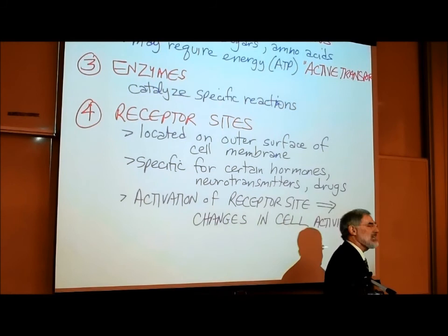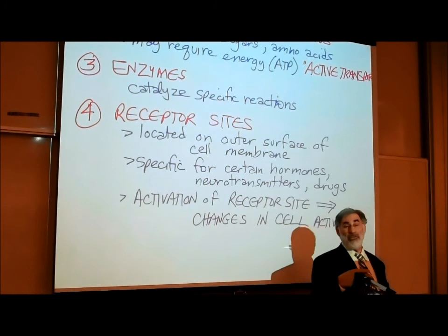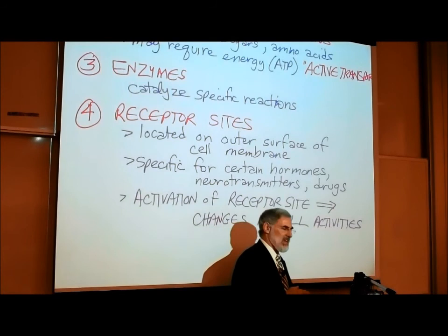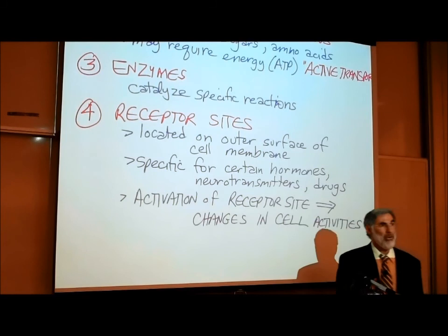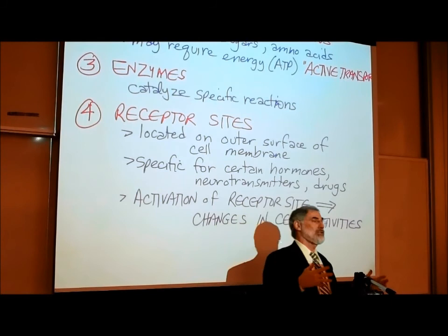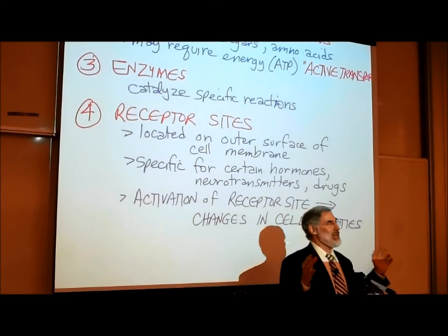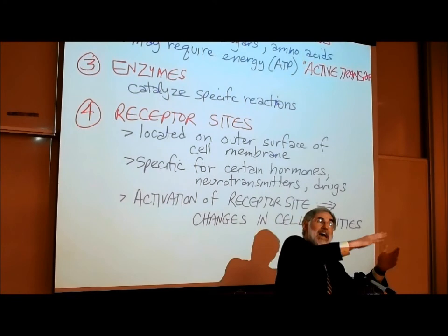Neurotransmitters are chemicals released by neurons. Examples of hormones include insulin and estrogen. Examples of neurotransmitters — chemicals released by neurons that can affect cells — would be dopamine, serotonin, or endorphins. How does serotonin, dopamine, or epinephrine affect some cells but not others? It can only affect those cells that have receptor sites on the outer surface. Only those cells allow dopamine to attach and activate a dopamine receptor site.